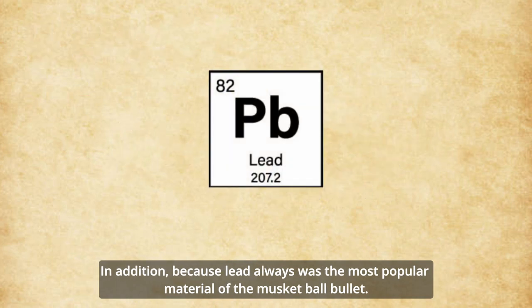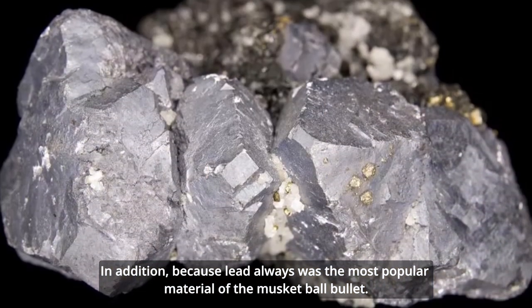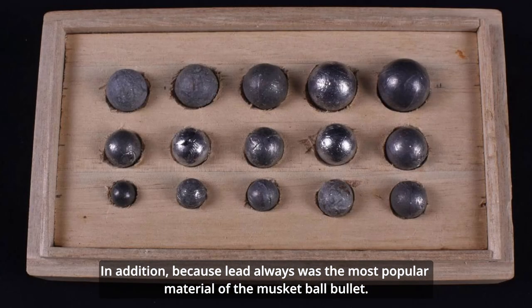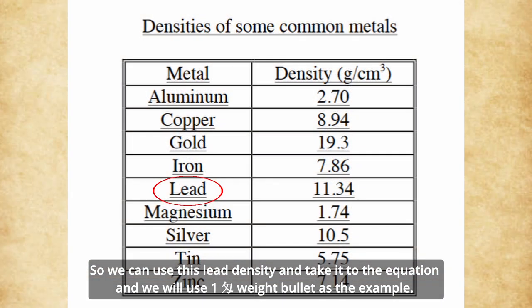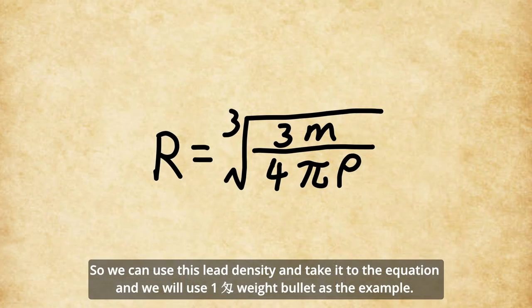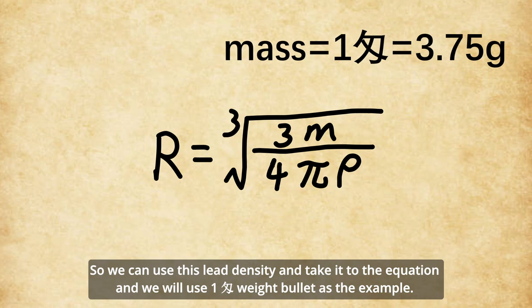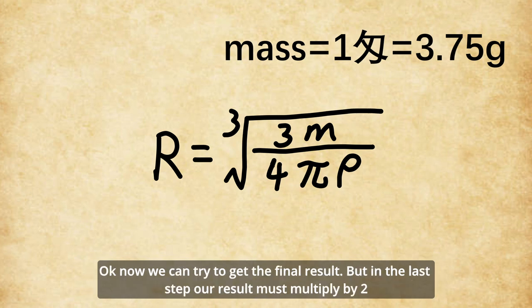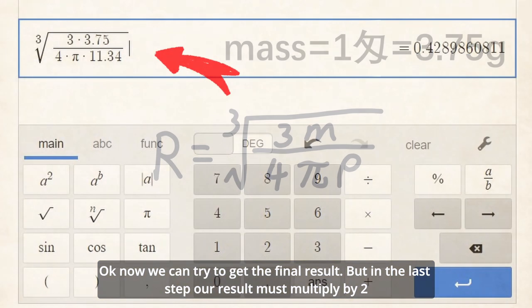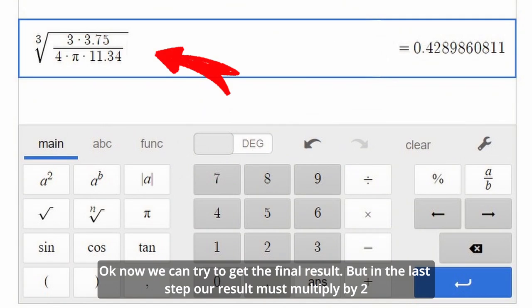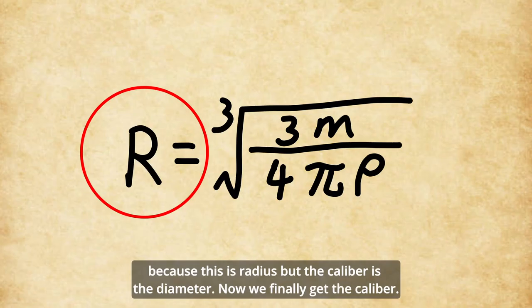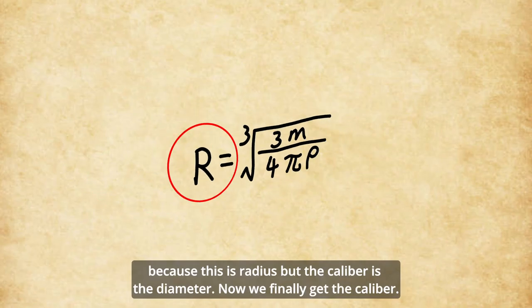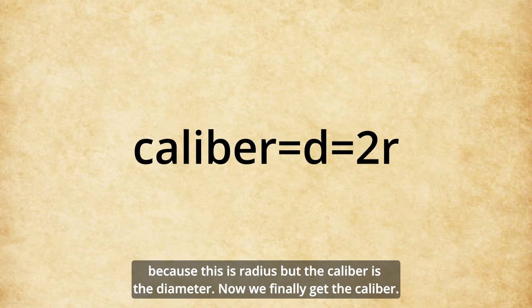Because lead was always the most popular material for matchlock bullets, we can use the lead density and plug it into the equation, using a one-monme weight bullet as the example. Now we can try to get the final result. In the last step, our result must be multiplied by 2, because the formula gives us the radius, but the caliber is the diameter. Now we finally get the caliber.